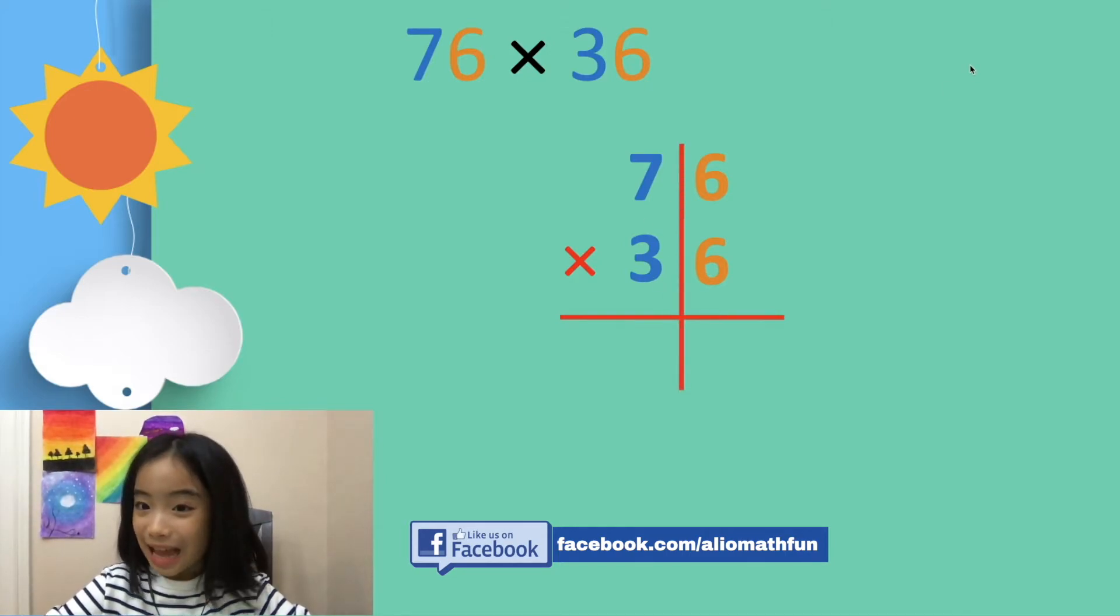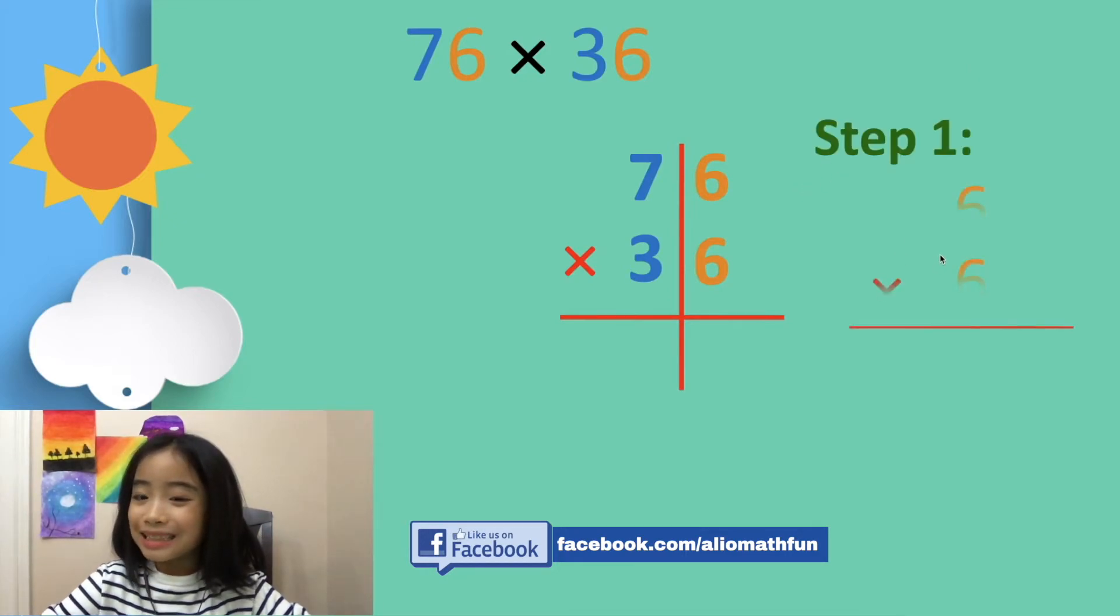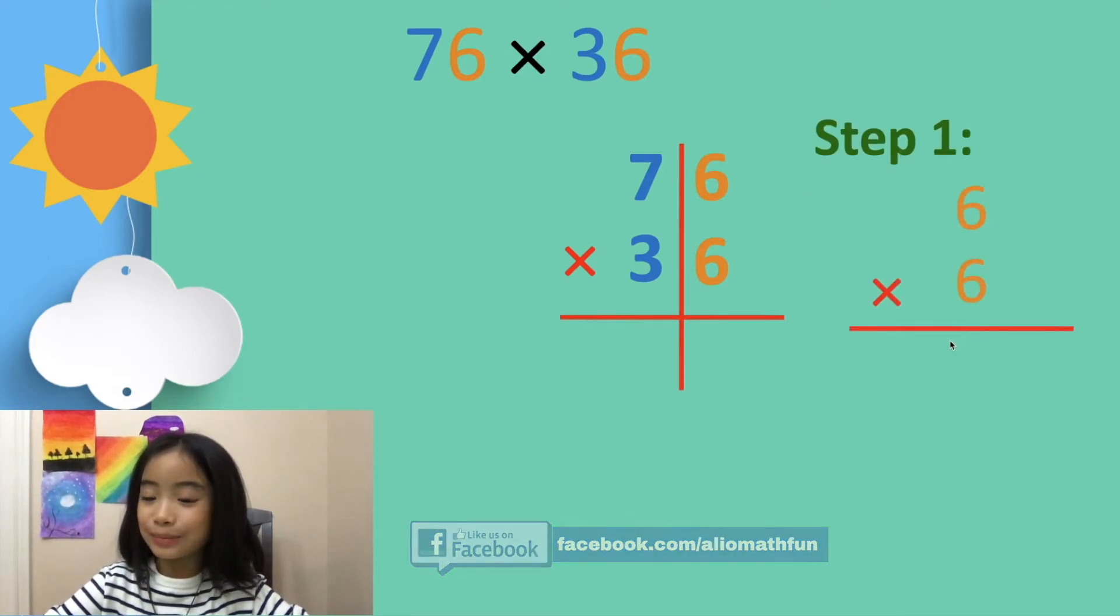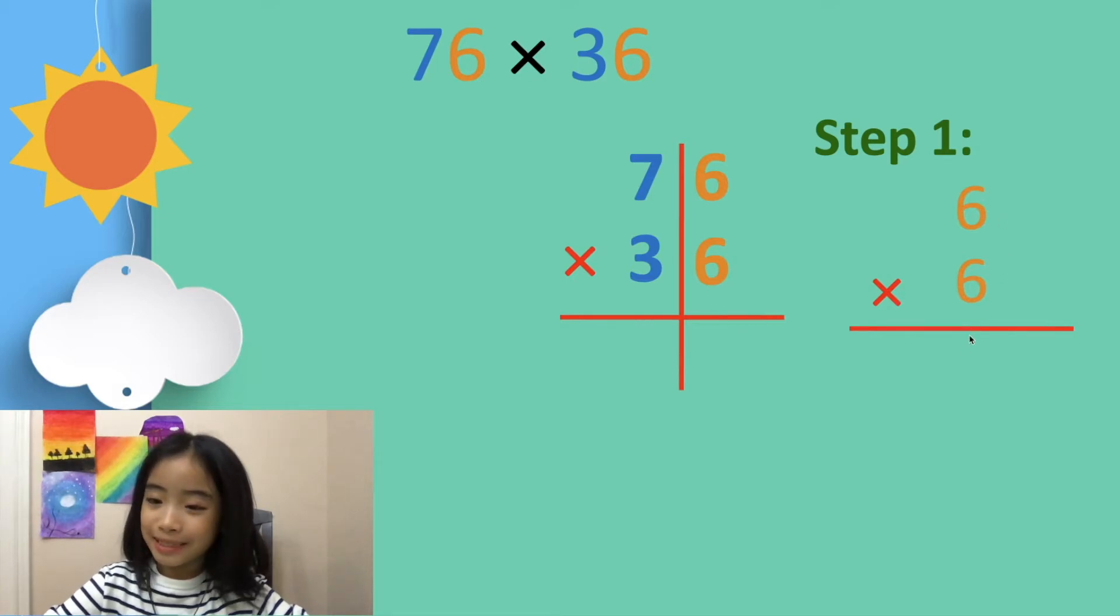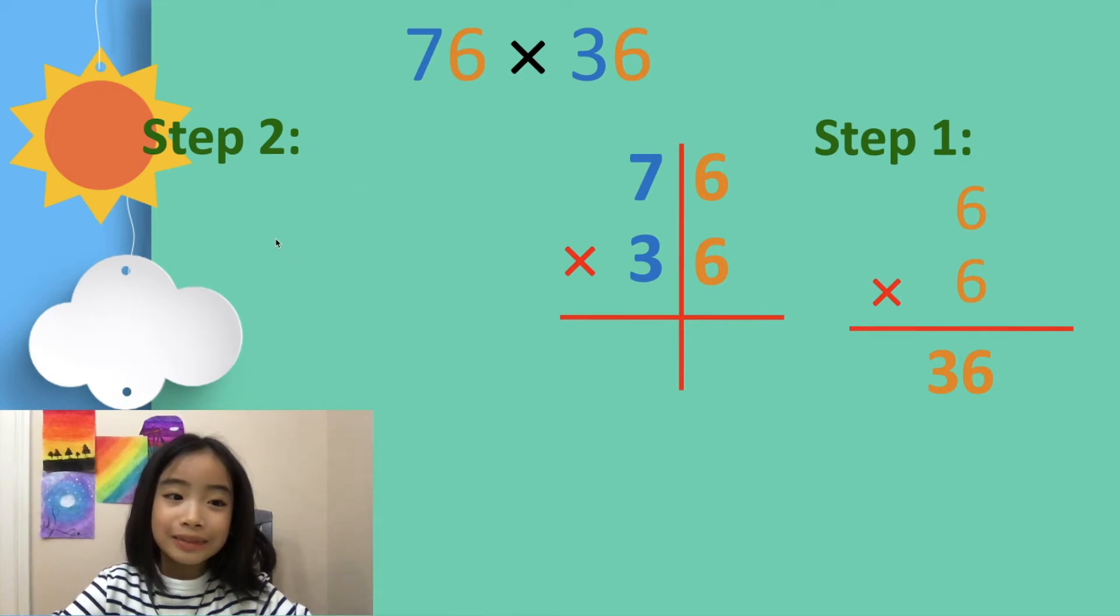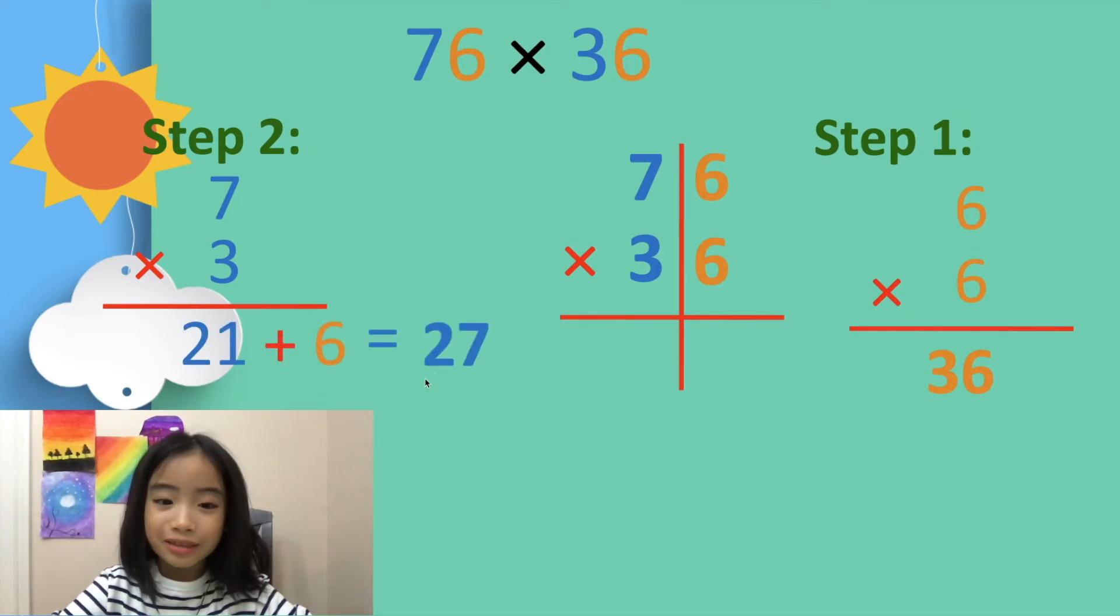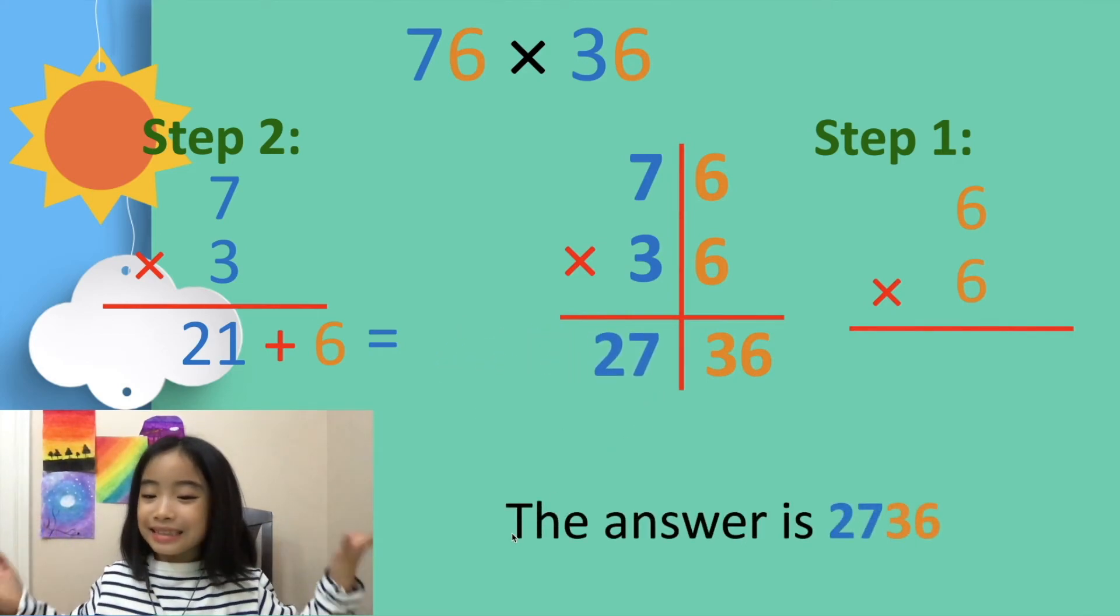First, let's multiply 6 times 6. 6 times 6 equals 36. Now, let's multiply 7 times 3. So 7 times 3 equals 21. 21 plus 6 equals 27. We put the 36 on the right side and the 27 on the left side. The answer is 2,736.